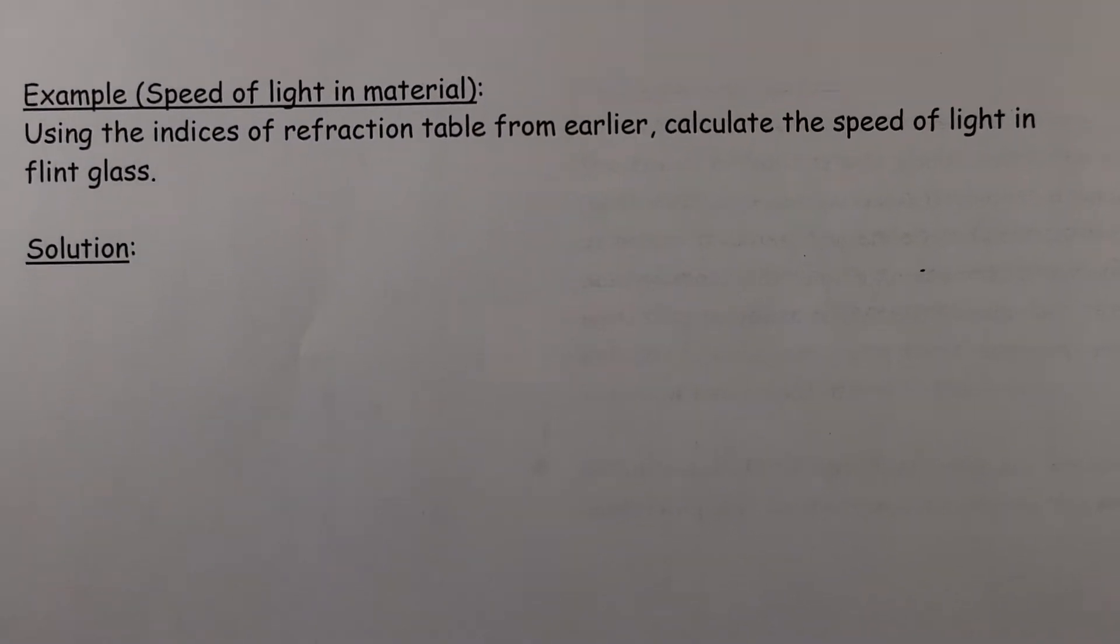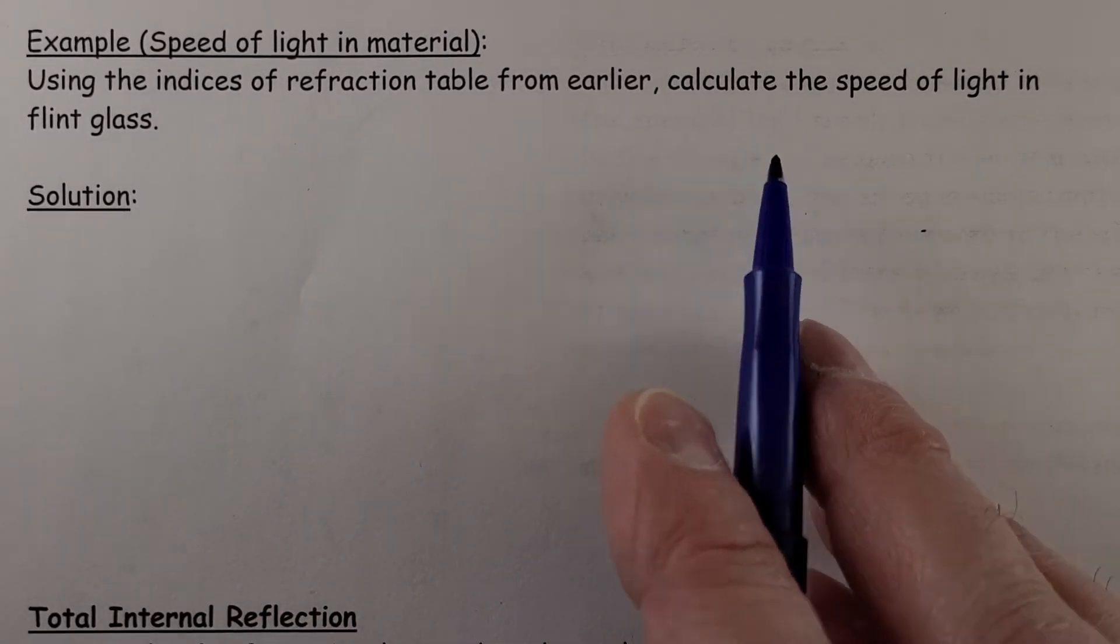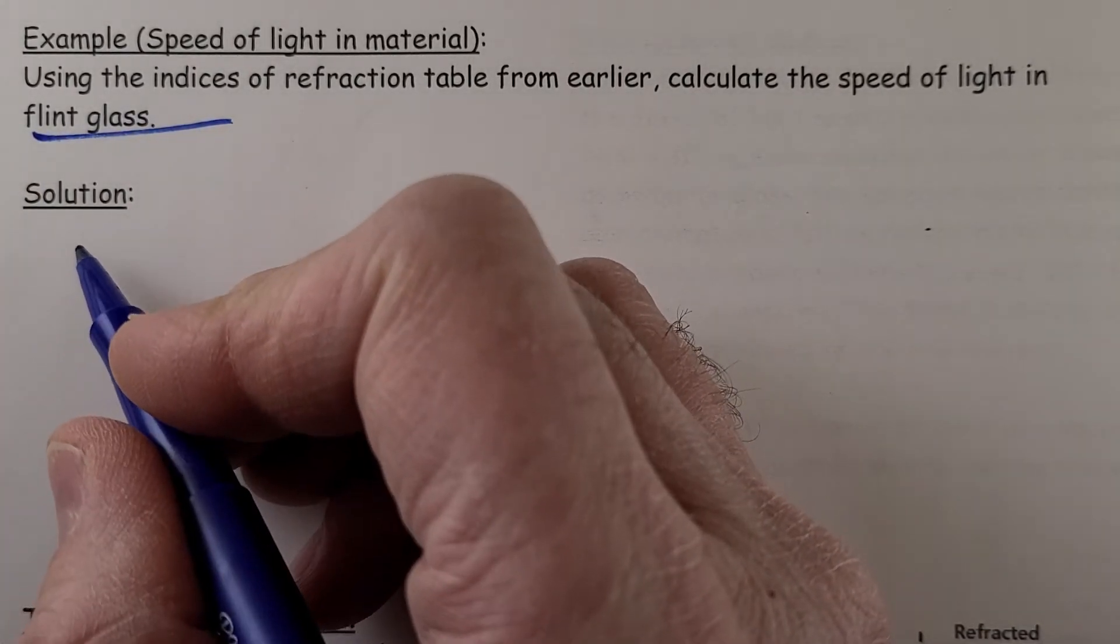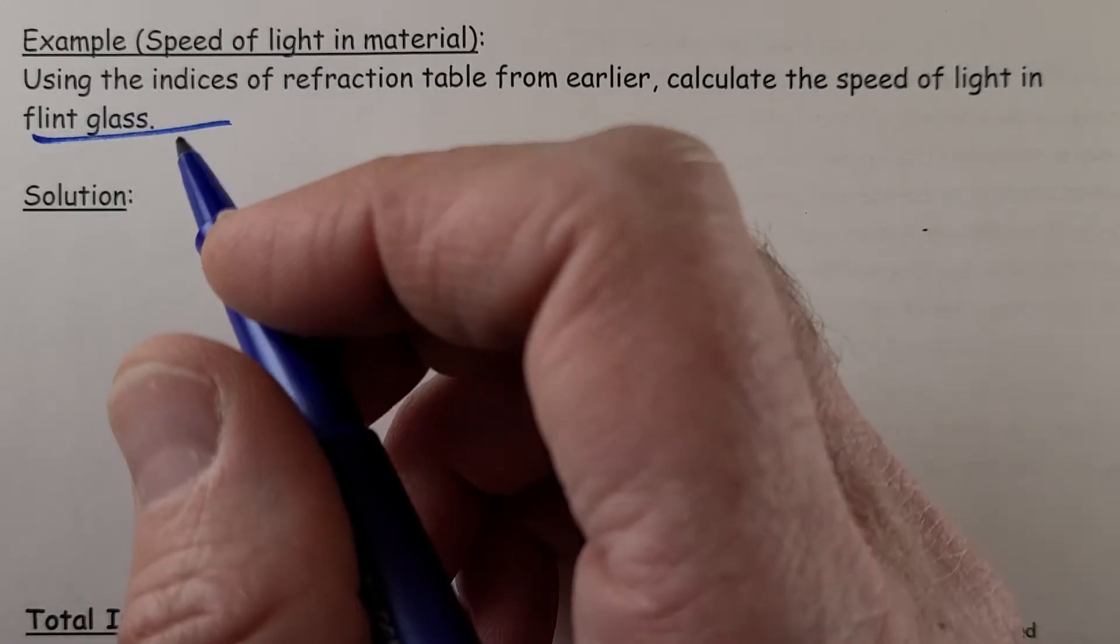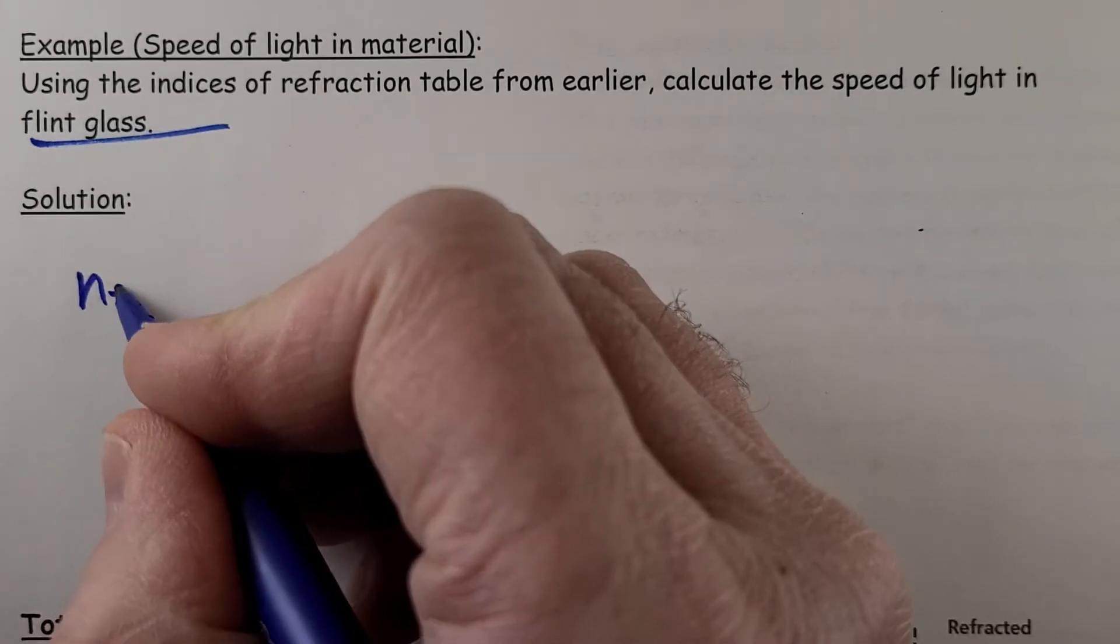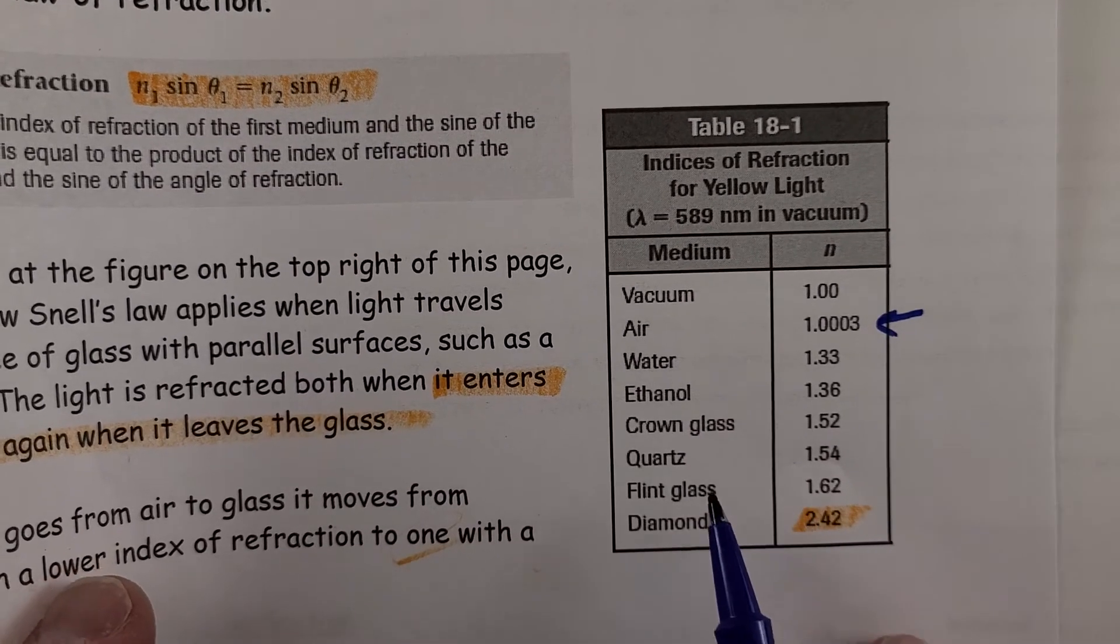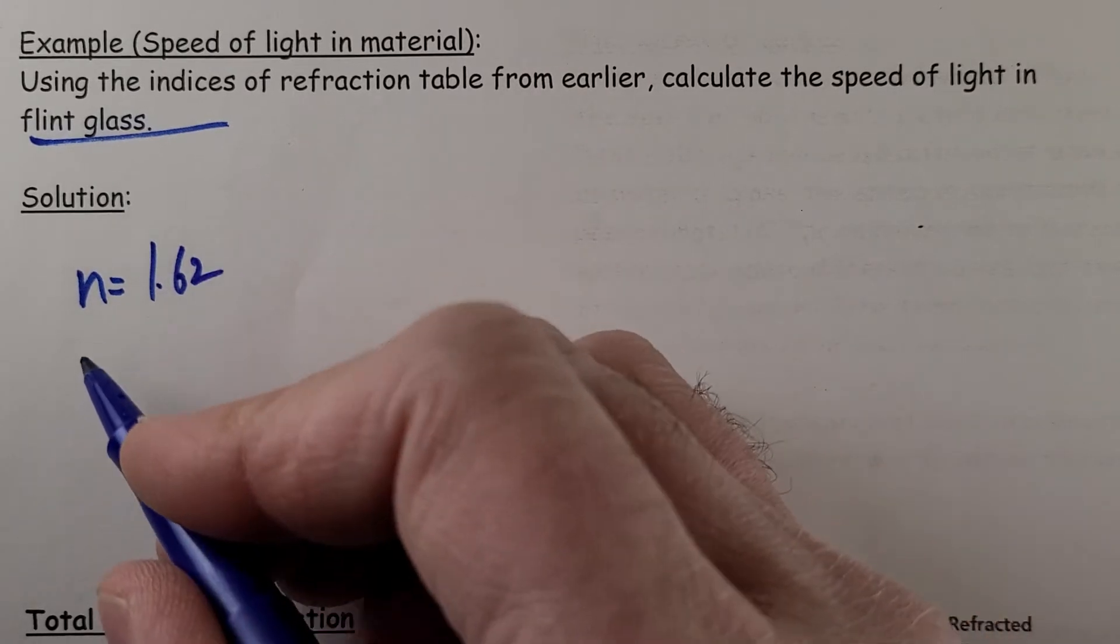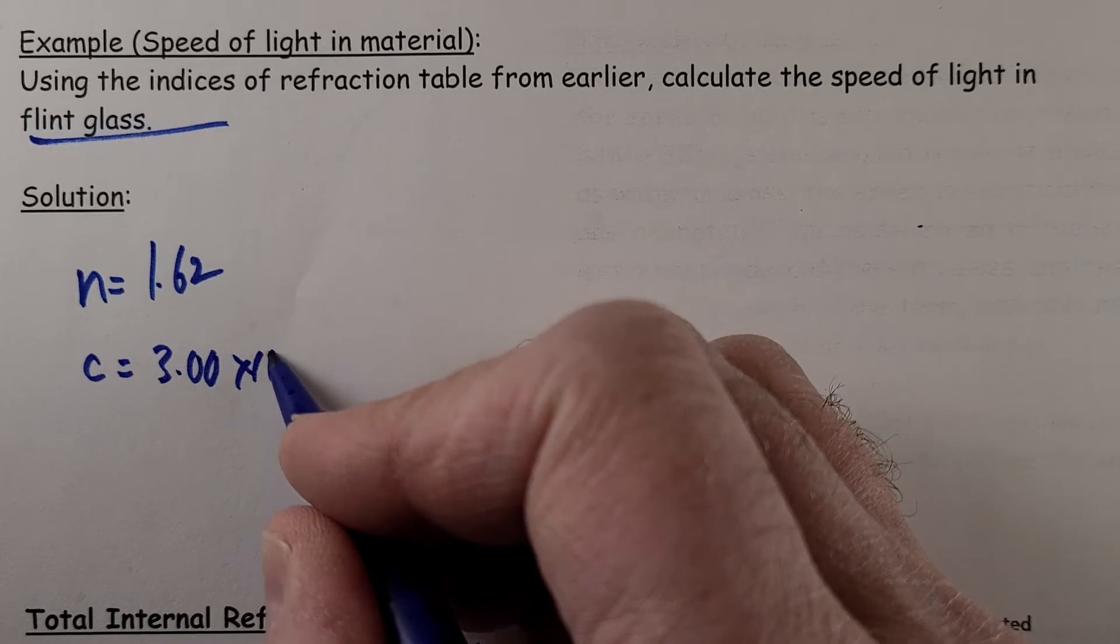Let's look at another scenario on the next page. Using the indices of refraction table from earlier, calculate the speed of light in flint glass. So in flint glass, assume we're going from air into glass. So flint glass, we're going to have to look that up. Right here, 1.62. So I'm going from air into flint glass. In air, 3.00 times 10 to the 8.